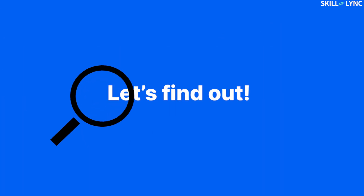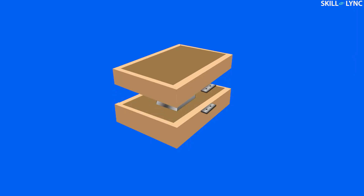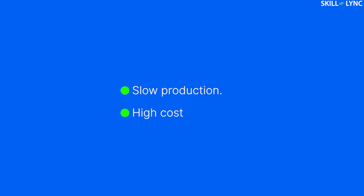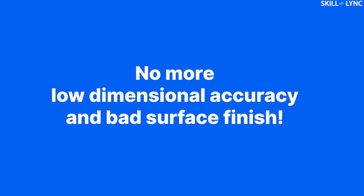This type of casting is categorized under special casting methods. As we all know, sand casting offers several advantages and various disadvantages. One of these disadvantages is that the sand mold is always destroyed after individual processes, which reduces the speed of production and drives up the cost. To overcome this problem, special casting methods are employed in industries. Using special casting methods, we can obtain better results at lower costs, and the limitations of low dimensional accuracy and bad surface finish can also be overcome.